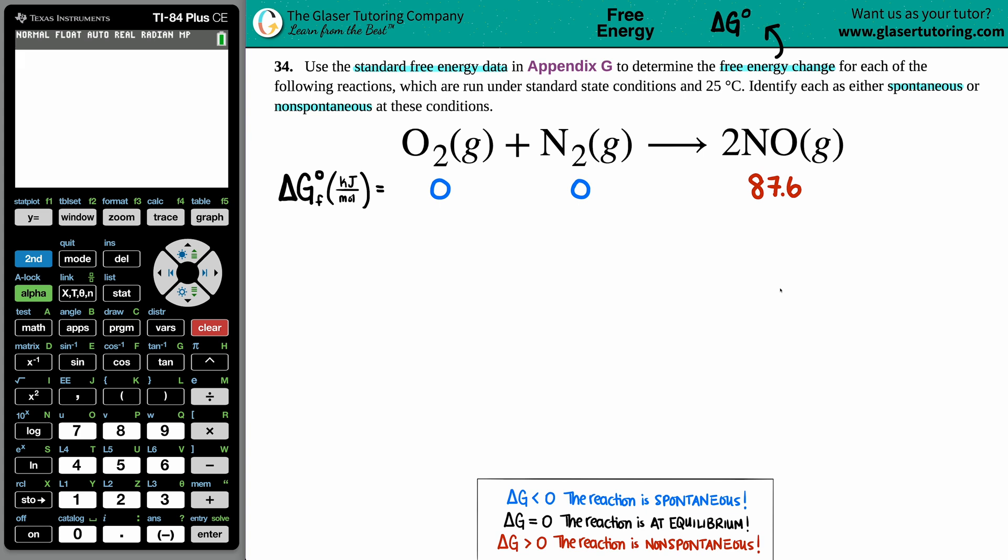Now from these values, how are we going to find that overall free energy change? Well, here's the formula right here. Delta G for the whole entire reaction is the sum, this little symbol means sum, aka addition.